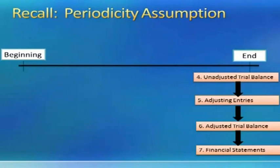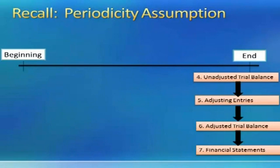So the beginning of the period starts with economic events occurring throughout the year. The accounting system continually captures those economic events by recording them in the journal and then posting them to the ledger. At the end of the accounting period, we're ready to make financial statements — but first we prepare an unadjusted trial balance, then adjusting entries, then an adjusted trial balance, and finally financial statements.